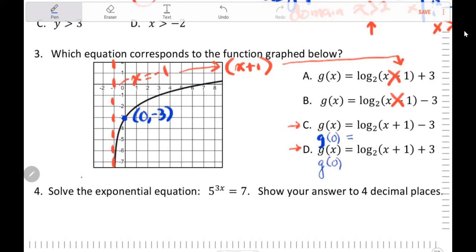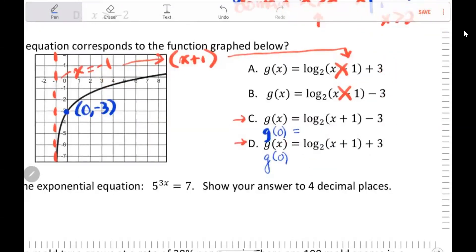And we're going to see if one of these is equal to minus 3. So we have log base 2 of 0 plus 1 subtract 3. And we're going to put that in our calculator. And the same thing with this one, log base 2 of 0 plus 1 plus 3.